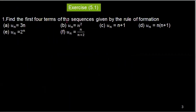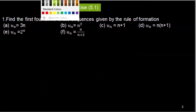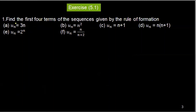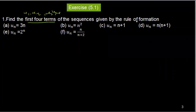Exercise 5.1, number one. Find the first four terms. The first four terms of the sequence given by the rules of formation. You can see the first four terms. What U1 means: the first term is 3 times.